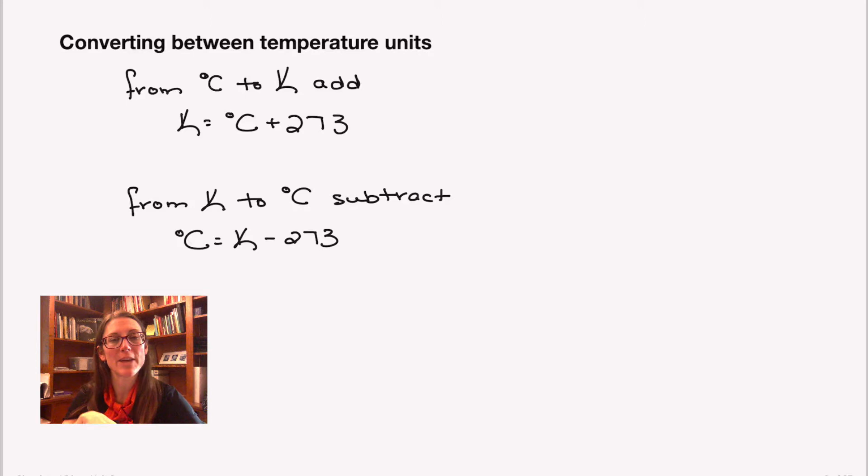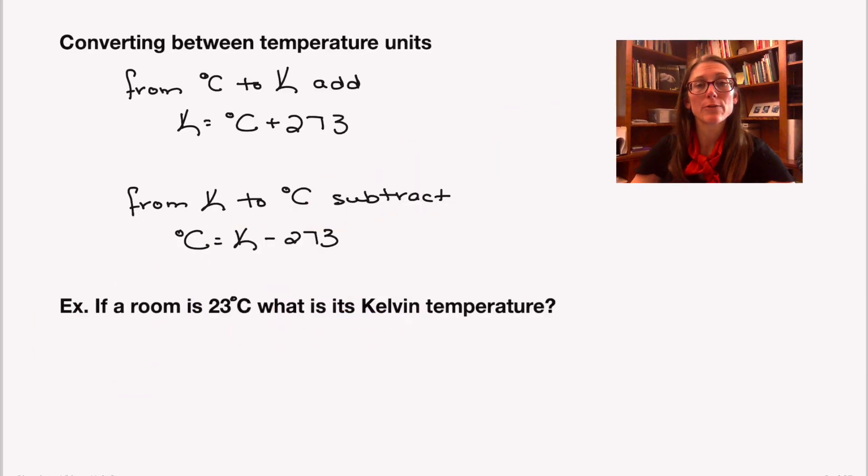Let's look at just one example to make sure this is good, and then we'll make sure we reinforce the connection between temperature and motion. So let's say a room is 23 degrees Celsius. What is that temperature in Kelvin? To find the temperature in Kelvin, we'll take 23 degrees Celsius and add 273 to that. And that gives us a value of 296 Kelvin for that temperature.